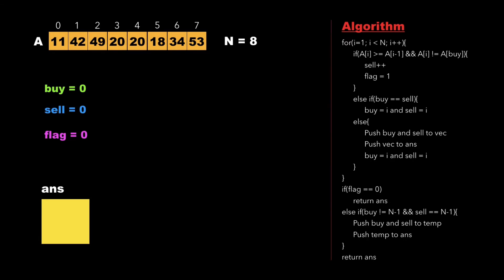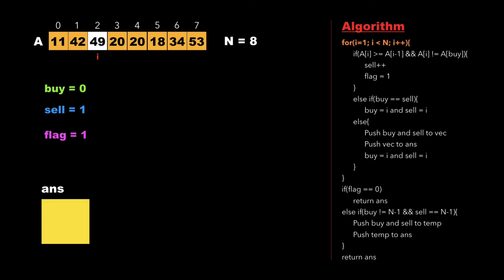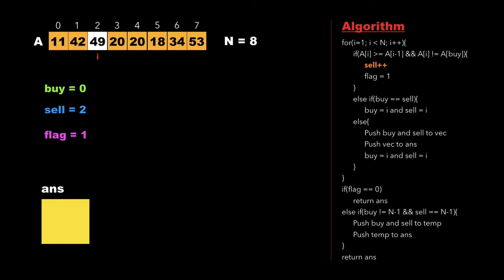The right side of the screen shows the algorithm where we first traverse the array from i equal to 1 to n. Initially i points to 1 and we check whether a[i] is greater than or equal to a[i-1] as well as a[i] is not equal to a[buy]. Since 42 is greater than 11 and 42 is not equal to 11, both conditions are true, therefore we increment the value of sell and update flag to 1, then increment i. Now i points to 49 and we check whether 49 is greater than or equal to 42 and 49 is not equal to 11. Both conditions are correct so we increment sell again and flag remains 1.